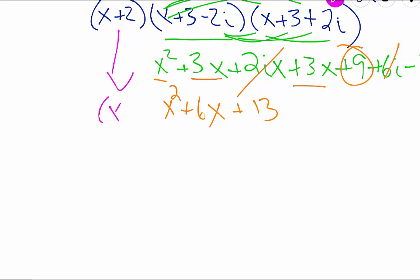So then we're going to drop down that x+2 that we had not multiplied by yet, and we're going to multiply it by the trinomial we just got. Distributing the x gets us x³ + 6x² + 13x. Distributing the 2 gives us 2x² + 12x + 26.